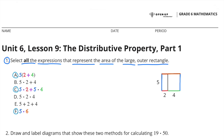Let's look at A: 2 plus 4 is 6, and 5 times 6 is 30. For C: 5 times 2 is 10, and 5 times 4 is 20, and 10 plus 20 is 30. For F: 5 times 6 is 30.